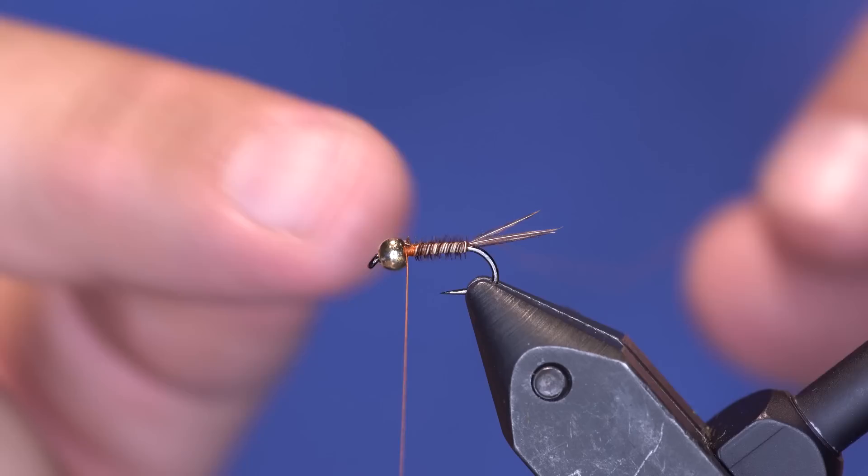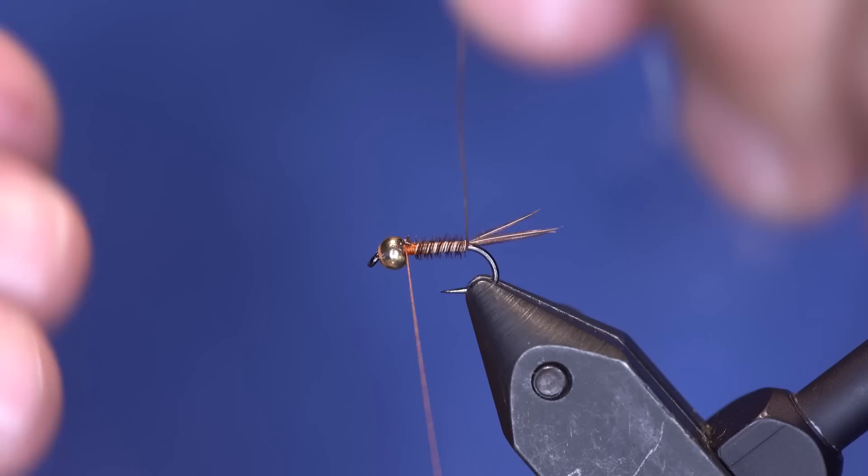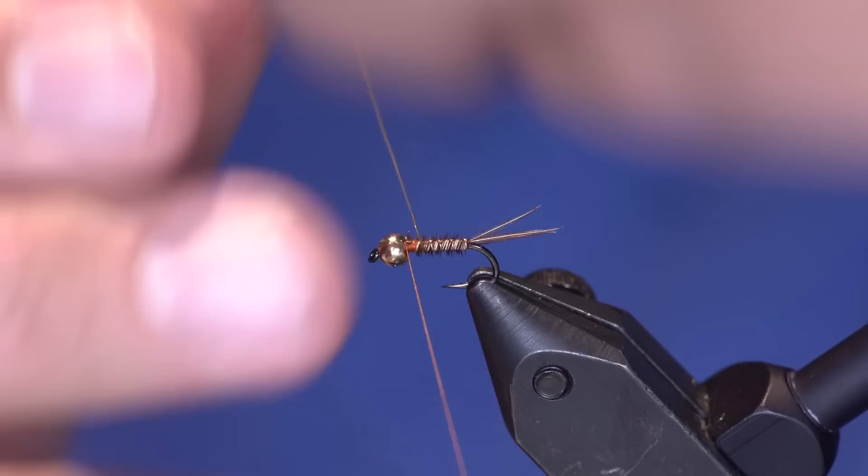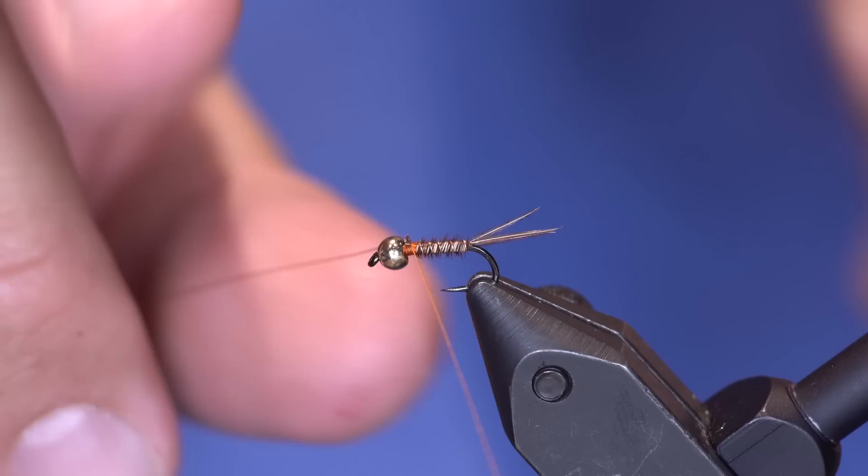Because a lot of times, like if you have hackle tied down and you want to wrap something else up, it's easy to bump that thread off the front of your fly and then it unravels. It's no bueno, trust me. If you don't do it you'll do it a few times and realize what I'm talking about. So I'm gonna counter wrap this gold wire forward. About right there, call it good, and helicopter that off. So boom, we have a pheasant tail.